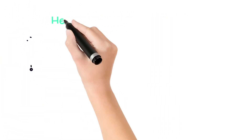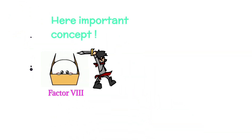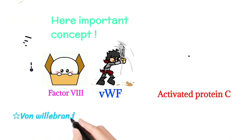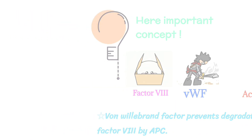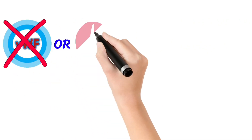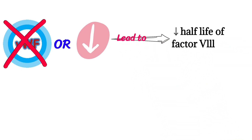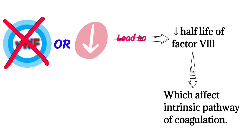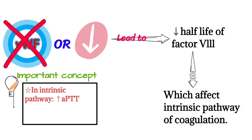An important concept: von Willebrand factor prevents degradation of Factor 8 by activated protein C, thereby increasing the half-life of Factor 8. So if there is a problem with von Willebrand factor, it decreases the half-life of Factor 8, which affects the intrinsic pathway of coagulation — resulting in an increased aPTT.